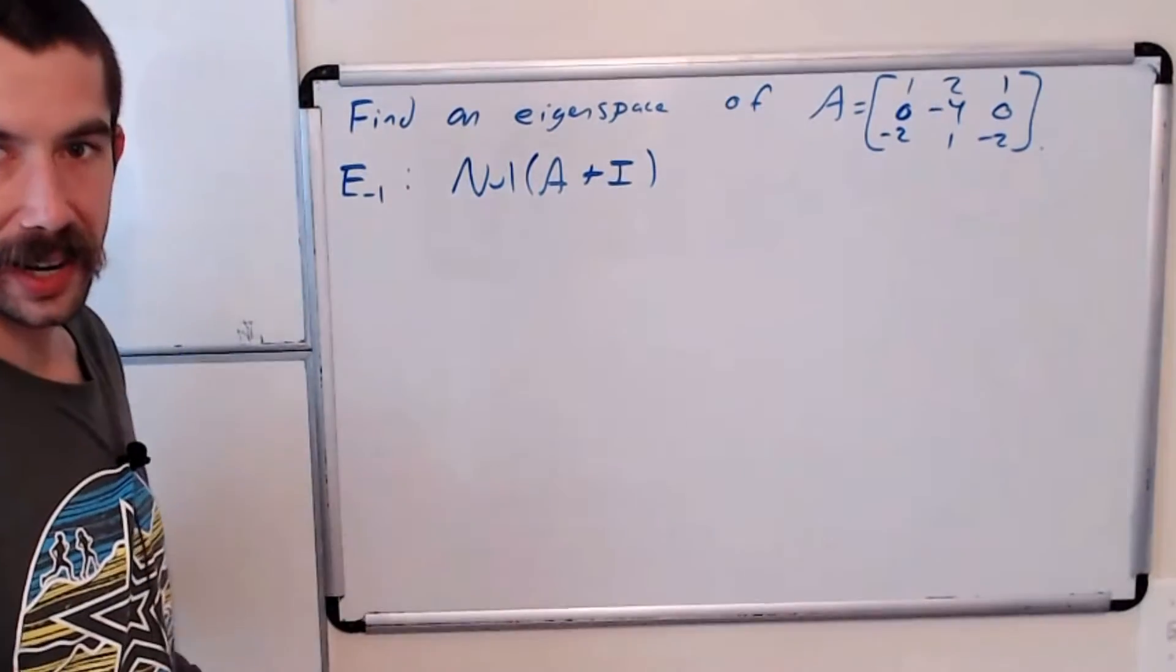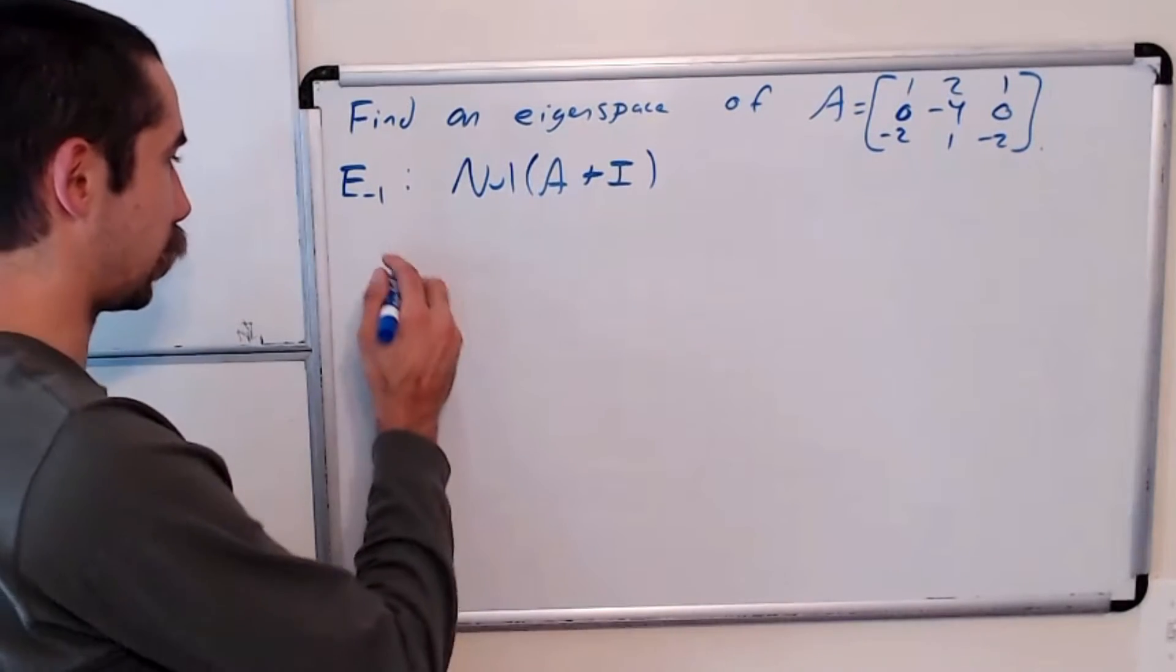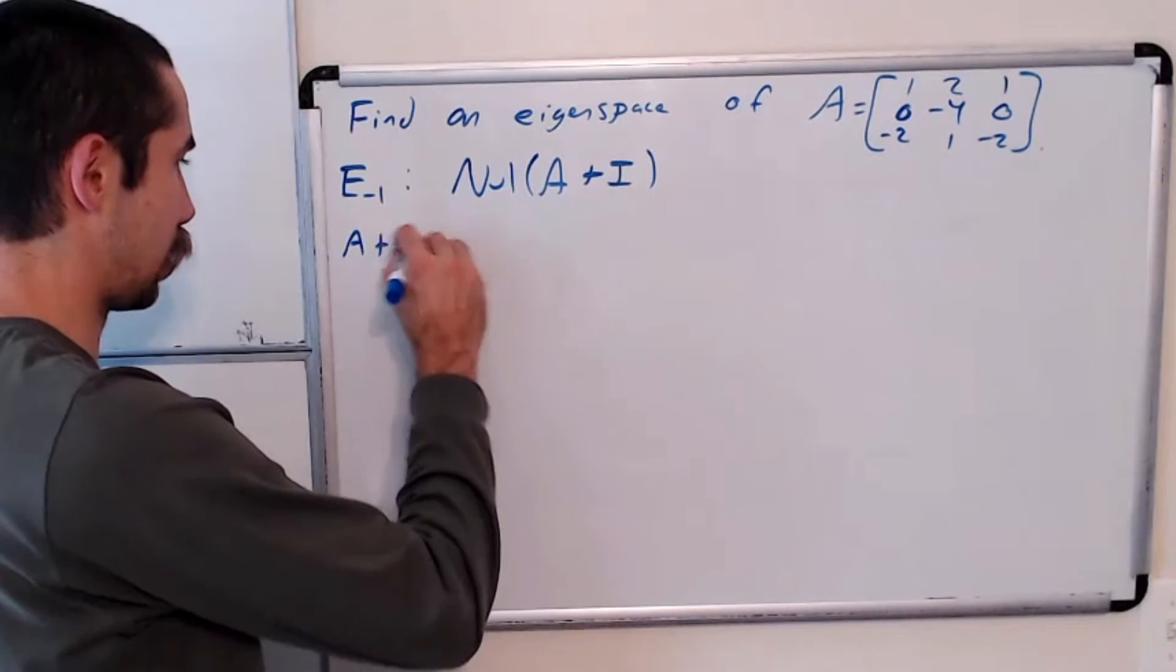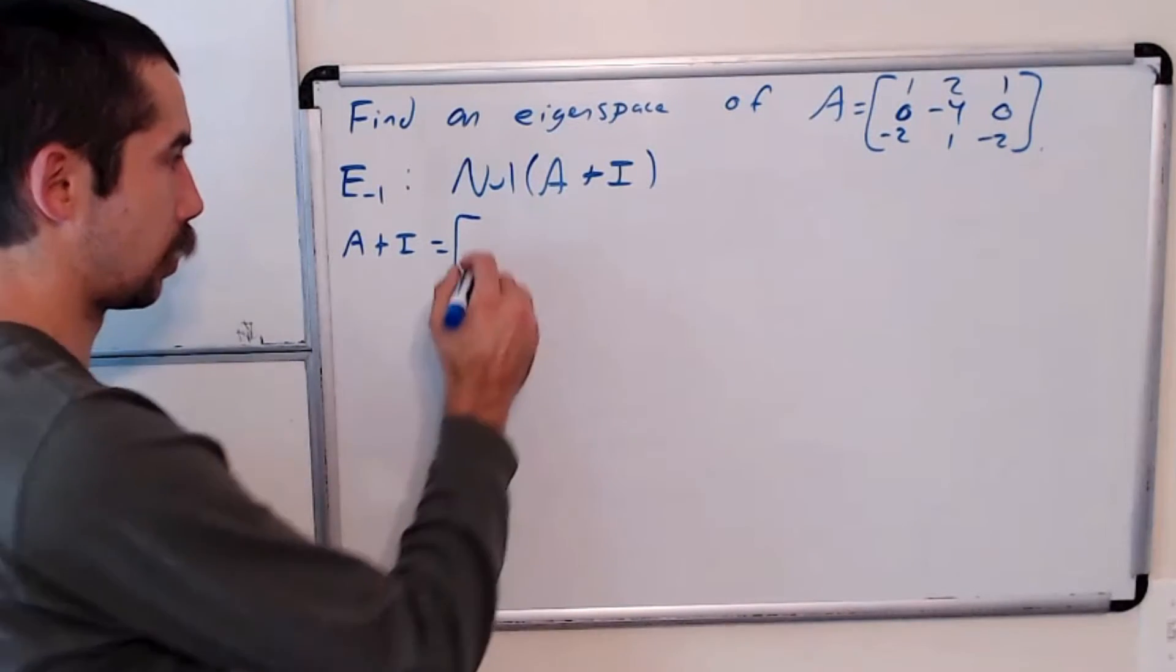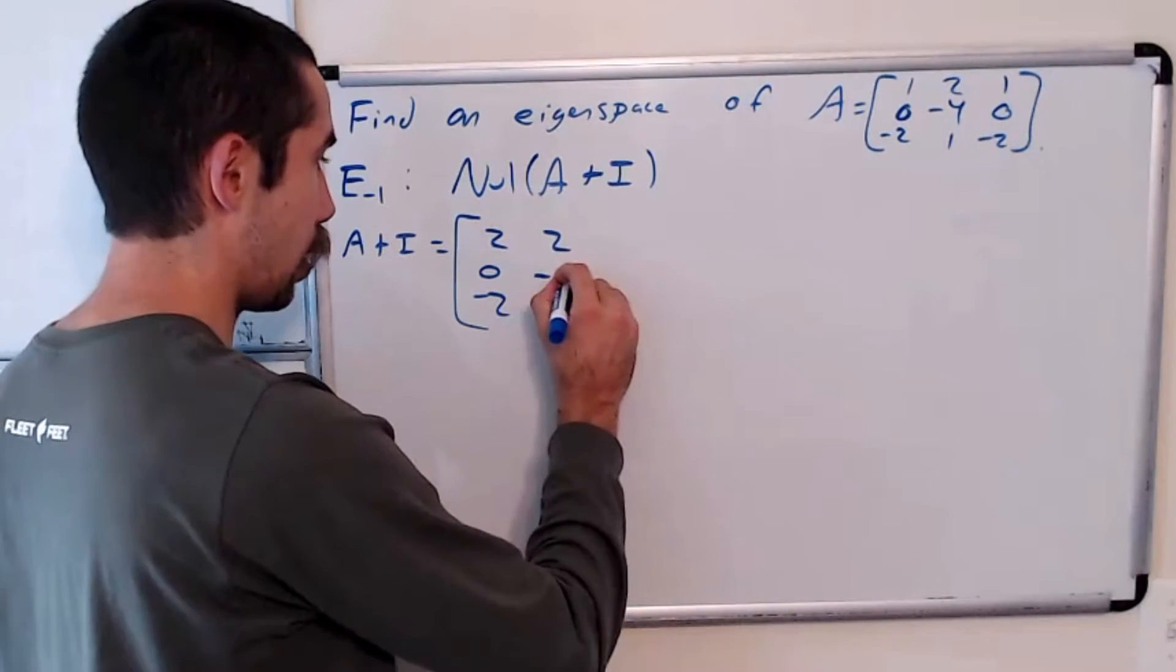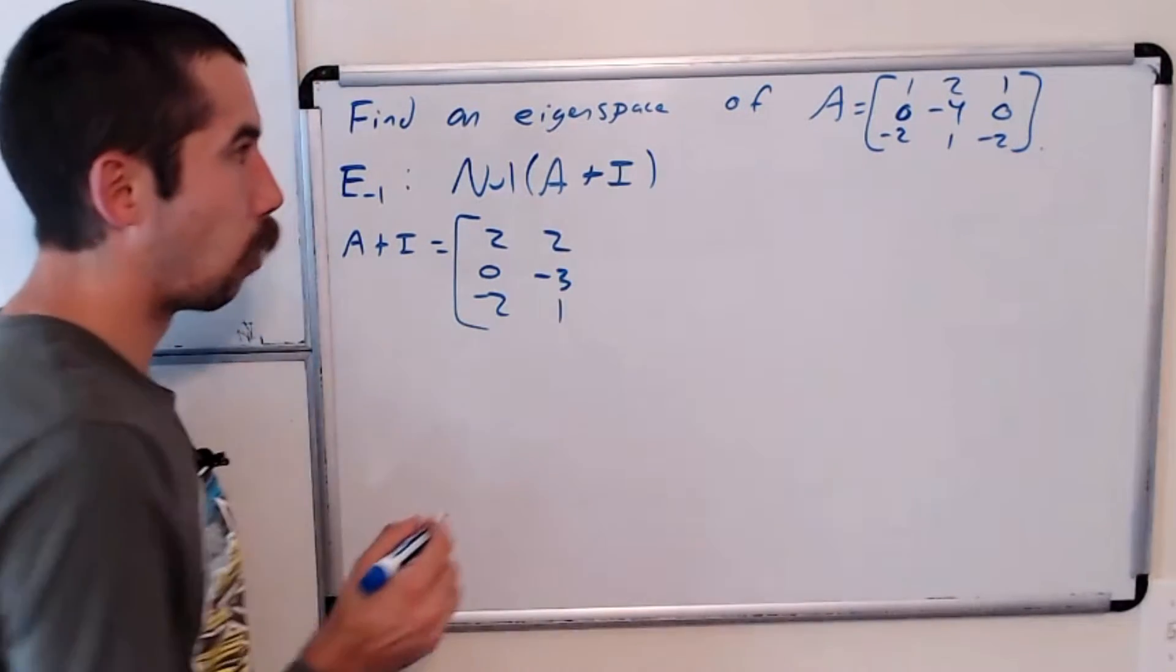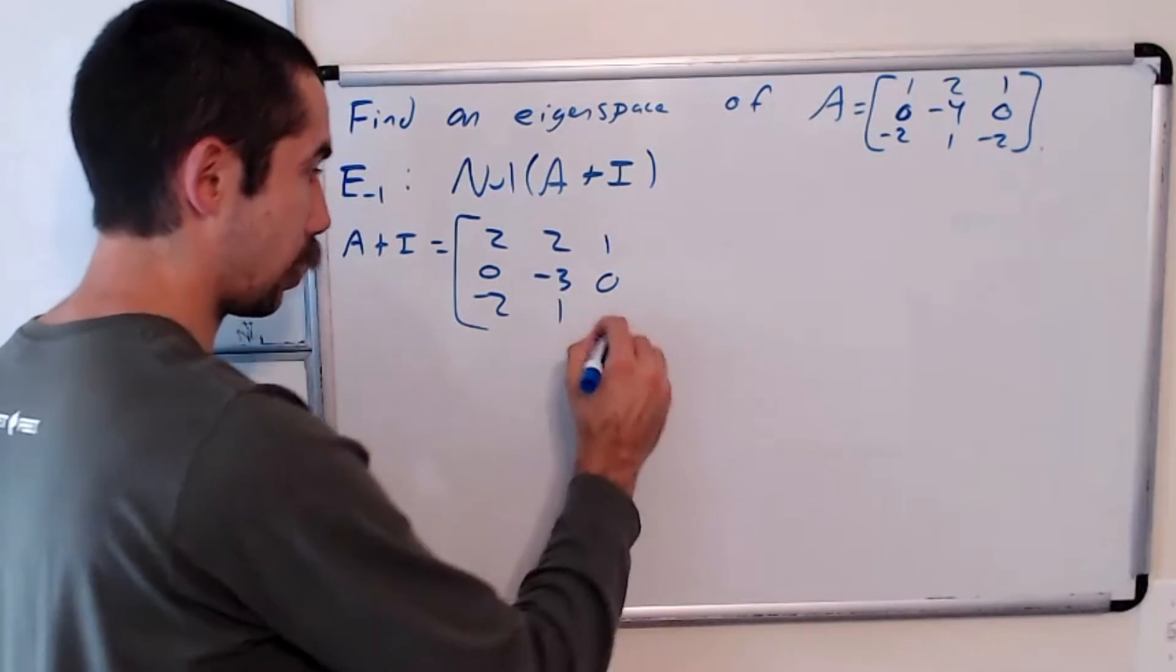Let's write out what A plus I is, and then we're going to row reduce it and find its null space. So A plus I is the matrix 2, 0, negative 2, 2, negative 3, 1, and 1, 0, negative 1.